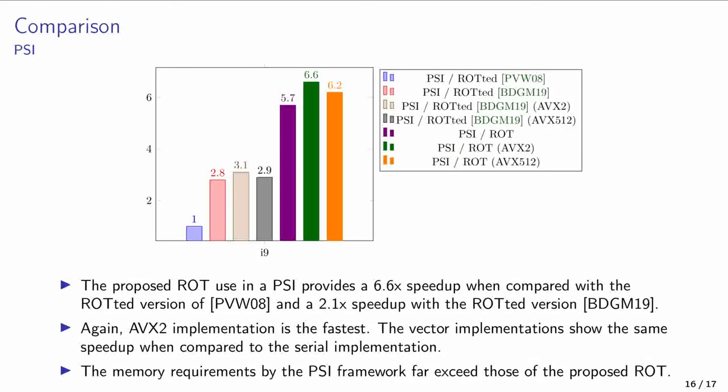When integrating all random OTs in the private set intersection framework, similar conclusions arise. Again, we used PVW as the baseline in this relative comparison. And again, our proposal was the fastest. Our proposed random OT, when used in the private set intersection framework, was at least twice as fast than the related art, reaching up to 6.6 times faster. Here, the AVX2 was again the fastest for the same reasons as before, while the relative improvements were about the same when considering two protocols with vector implementations, or when comparing serial implementations.